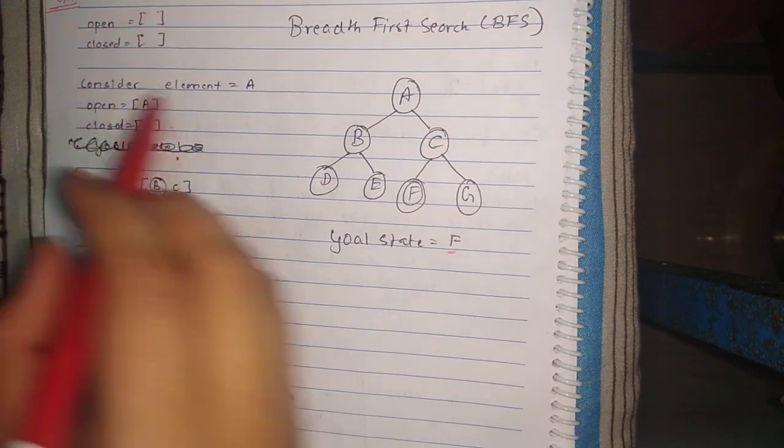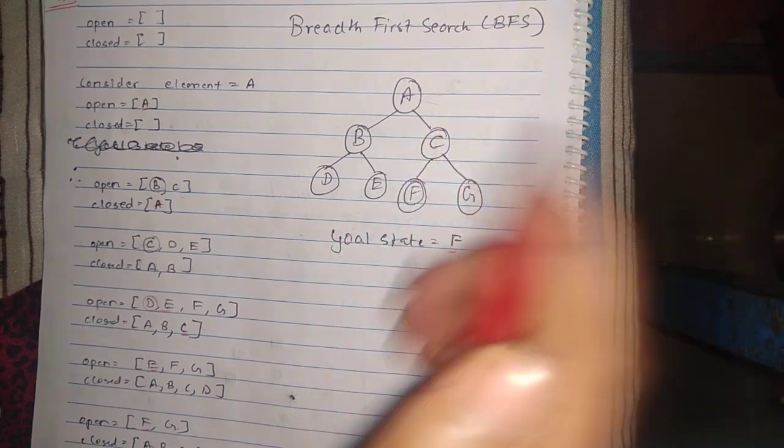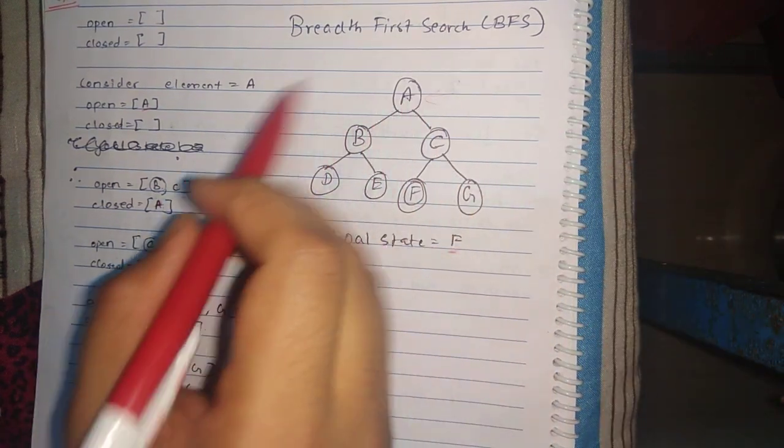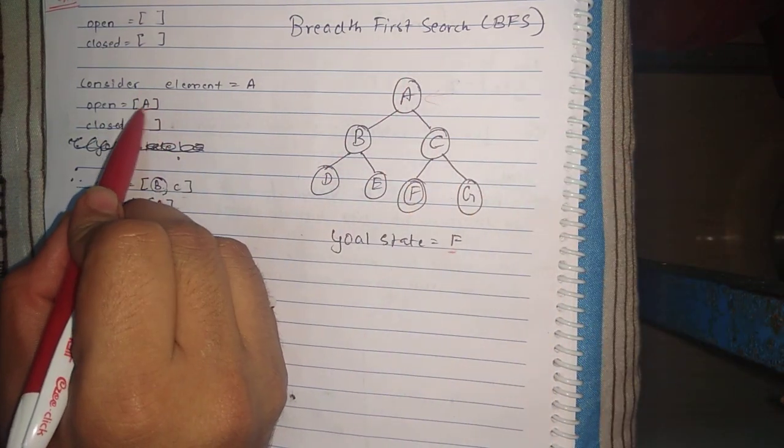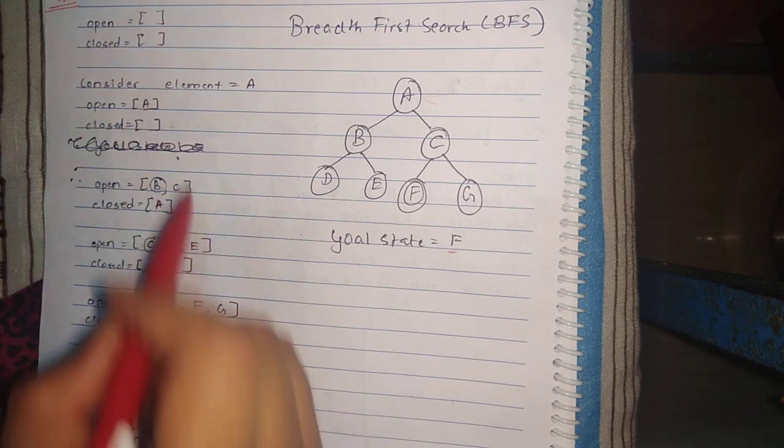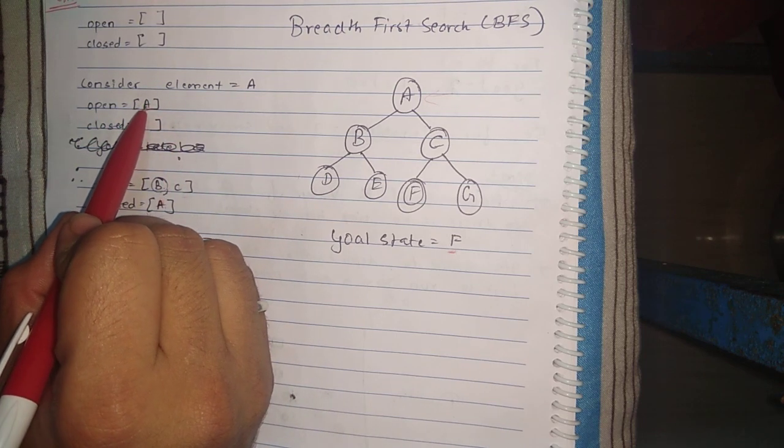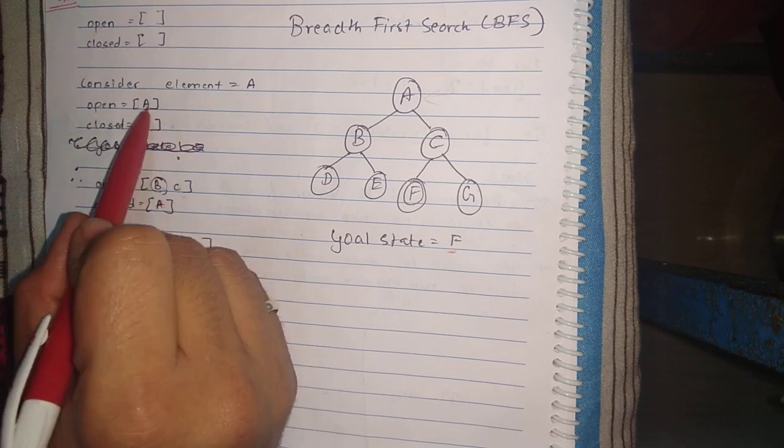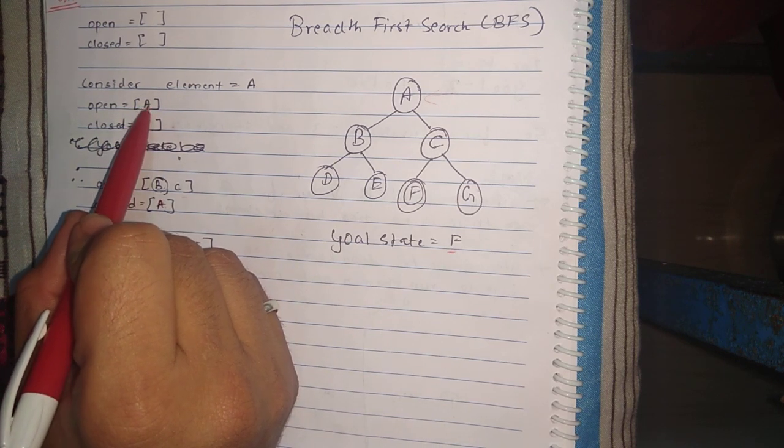We'll start by taking two arrays: open and closed array. First, we'll start from the root node, which is A, so we'll place that element A in the open array. Then we'll check whether A is the goal state or not.